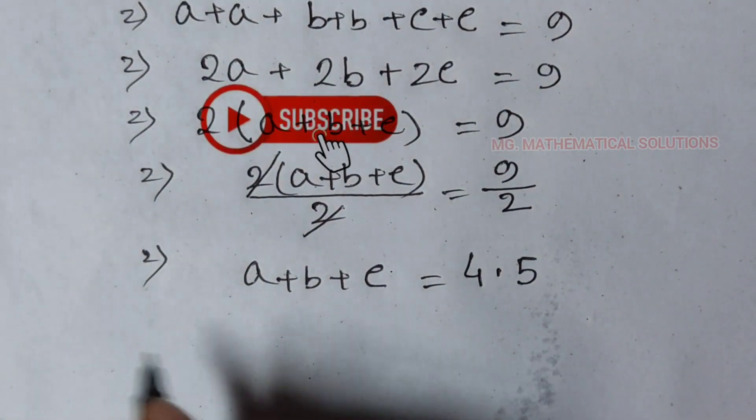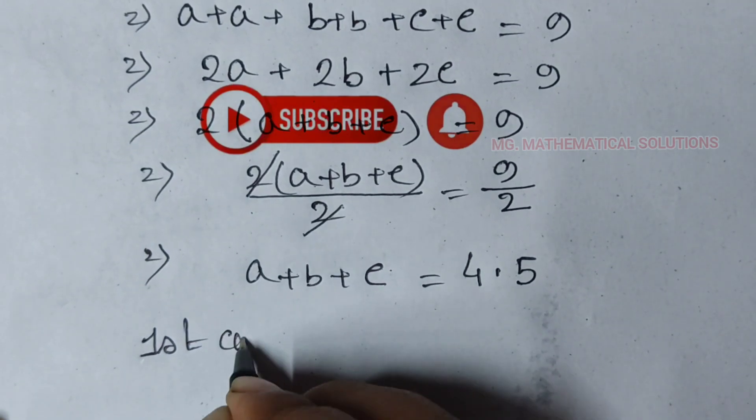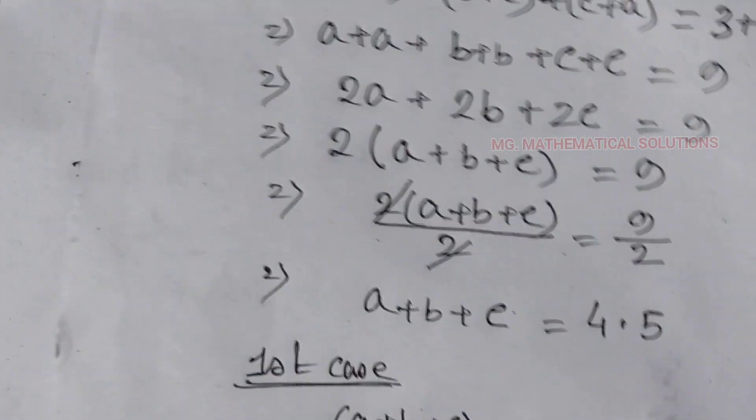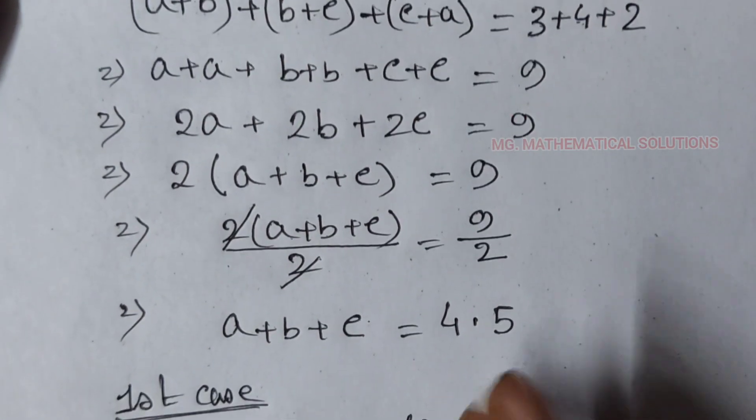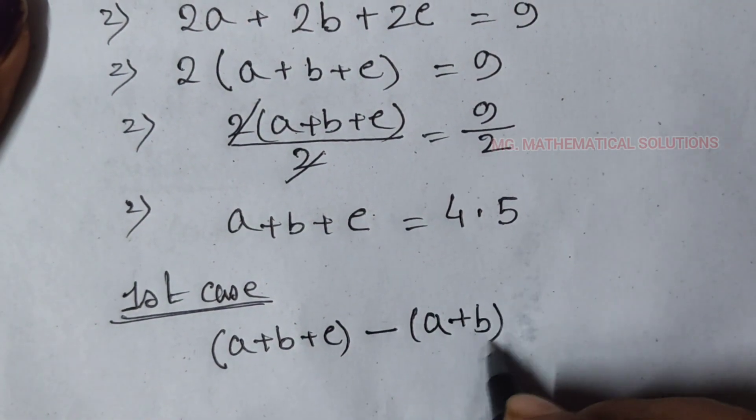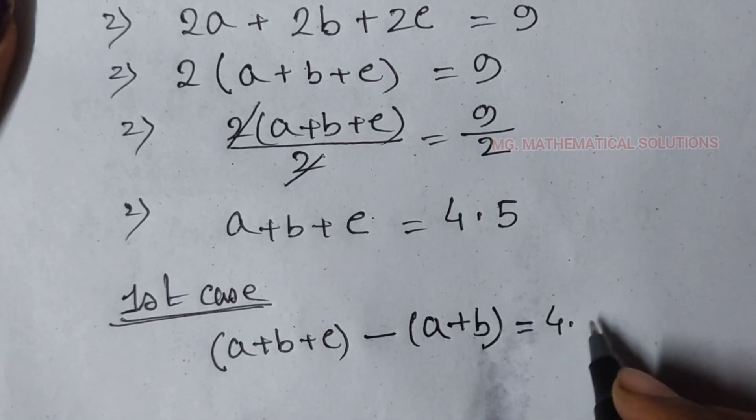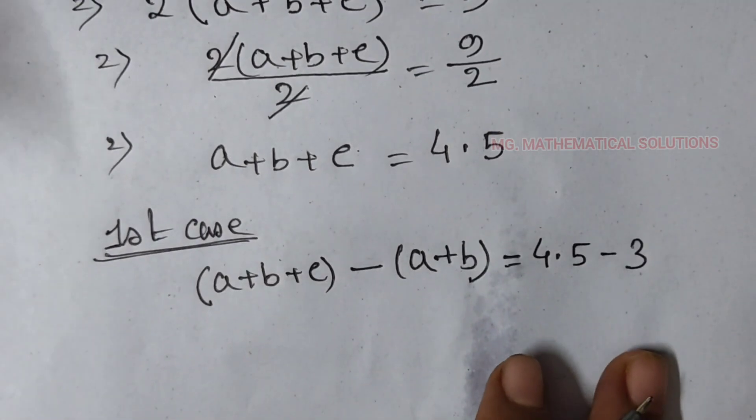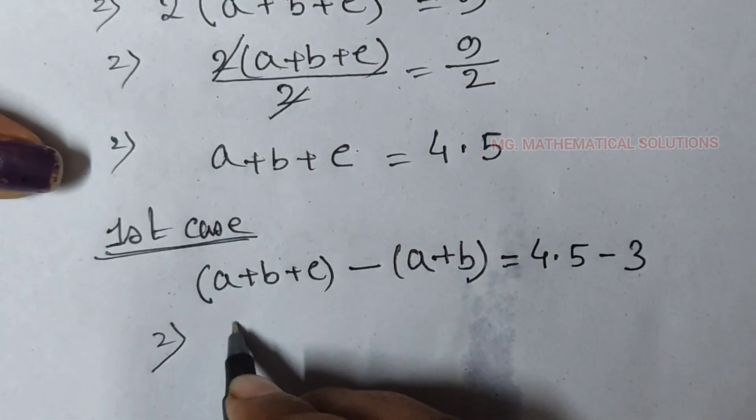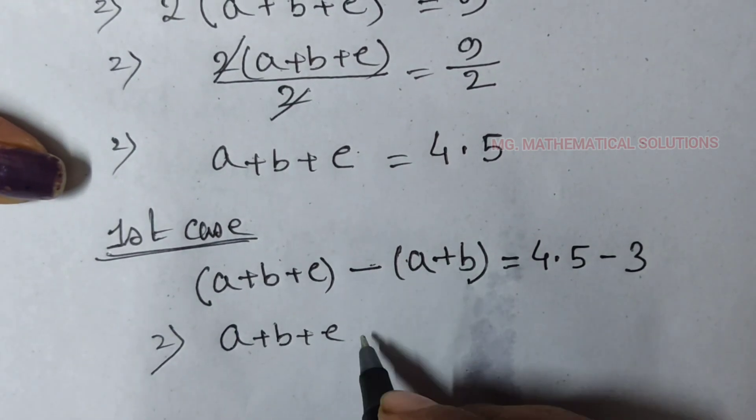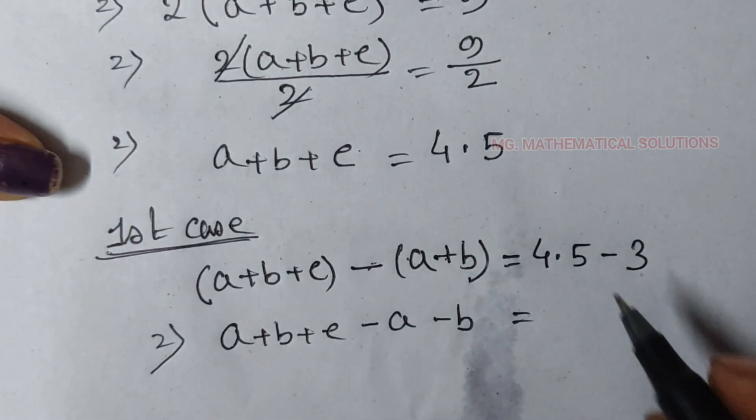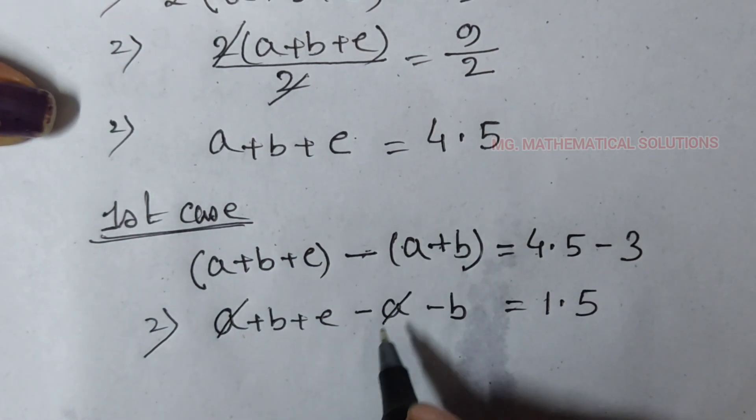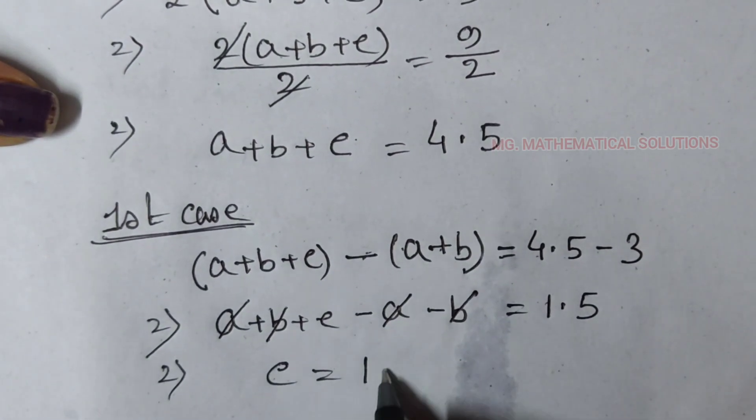Now, first case. We subtract a plus b plus c minus a plus b. A plus b equal to 4.5 minus 3, equal to 3. Then a plus b plus c minus a minus b equal to 4.5 minus 3, that's 1.5. A cancelled, b cancelled. This implies c equal to 1.5.